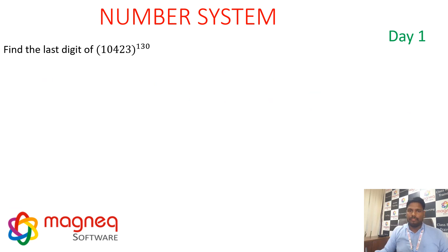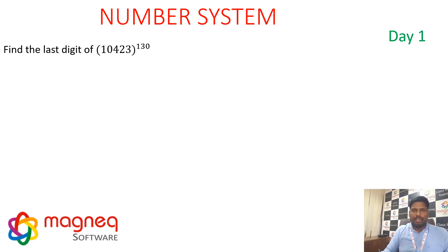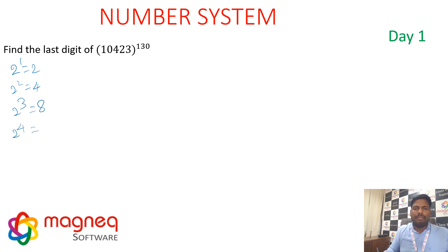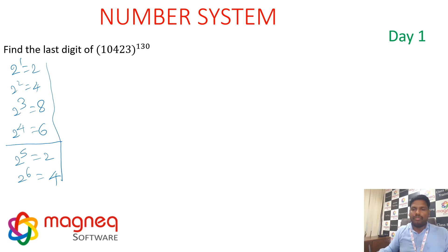Find the last digit of 10,423 to the power 130. This is very important. First, understand the pattern for digit 2: 2¹ ends in 2, 2² ends in 4, 2³ ends in 8, 2⁴ ends in 6, 2⁵ ends in 2 again — repetition after every 4 powers.